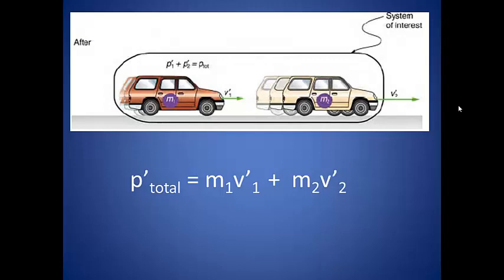We are assuming that the mass of each vehicle remains the same, so if the momentum changes, it must cause a change in the velocity of each car. We represent this new velocity as v prime, and this new momentum as p prime.